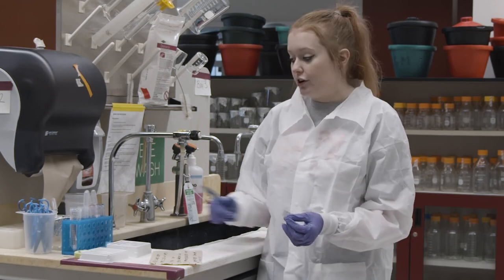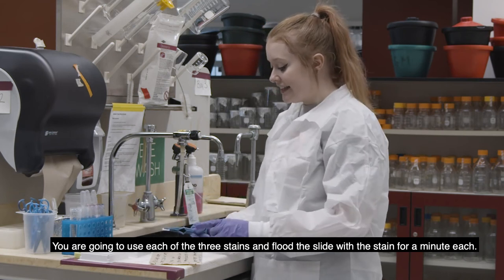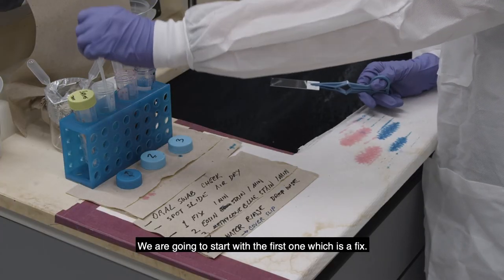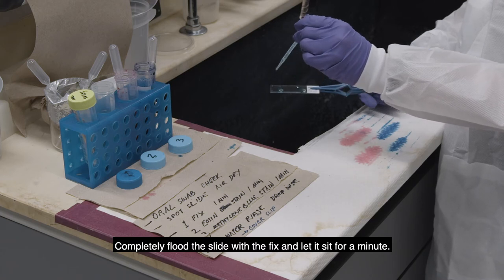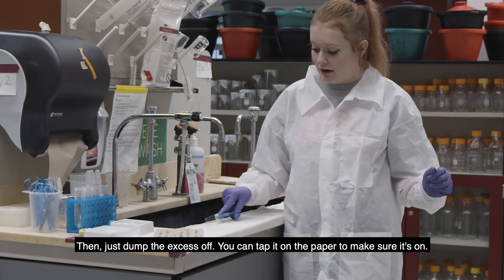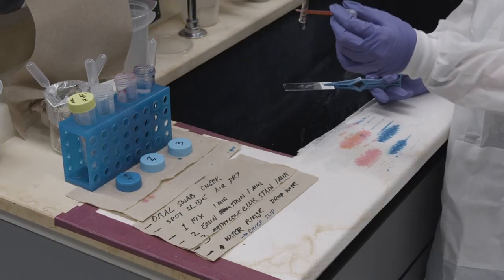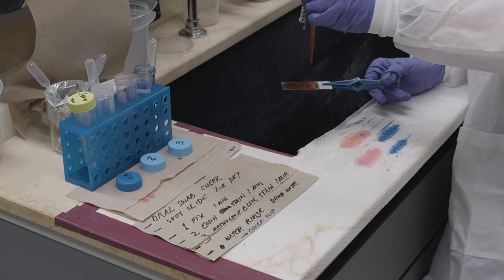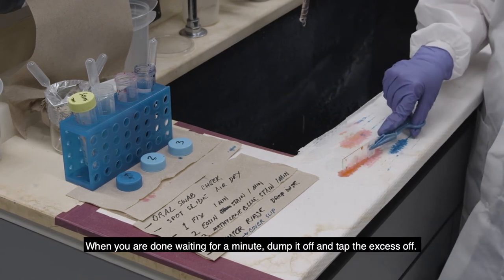So after swabbing your cells on the slide, you're going to stain your cells now. So we'll have forceps here. So you're just going to clip your slide into the forceps. And then you're going to use each of the three stains and flood the slide with the stain for a minute each and then dump it off and then put the next one. So we're going to start with the first one, which is a fix. So just completely flood the slide with the fix. And then just let it sit on there for a minute. And then just dump the excess off and you can tap it on the paper to make sure it's off. And then next you're going to add the eosin stain. So again, just flood the slide for a minute. And then when you're done with the minute, dump it off and then tap the excess off.